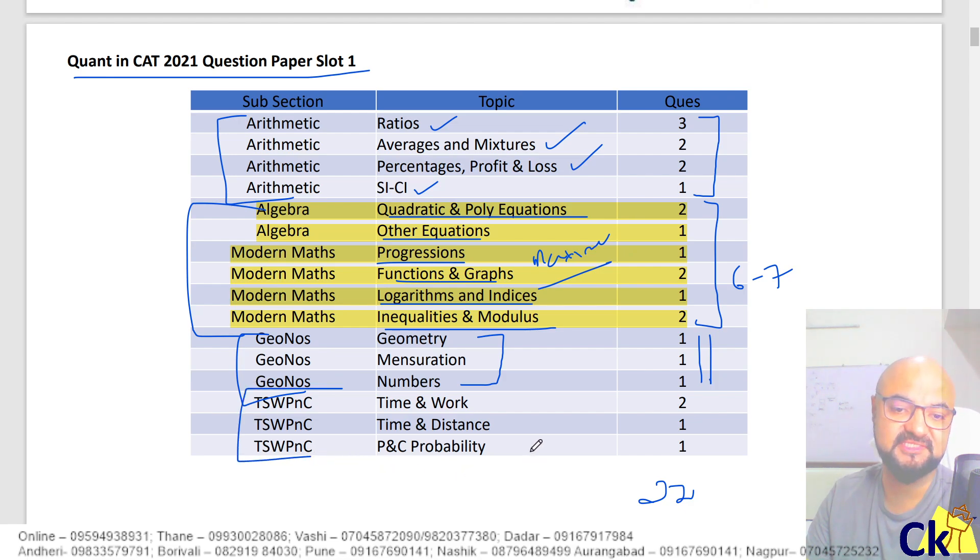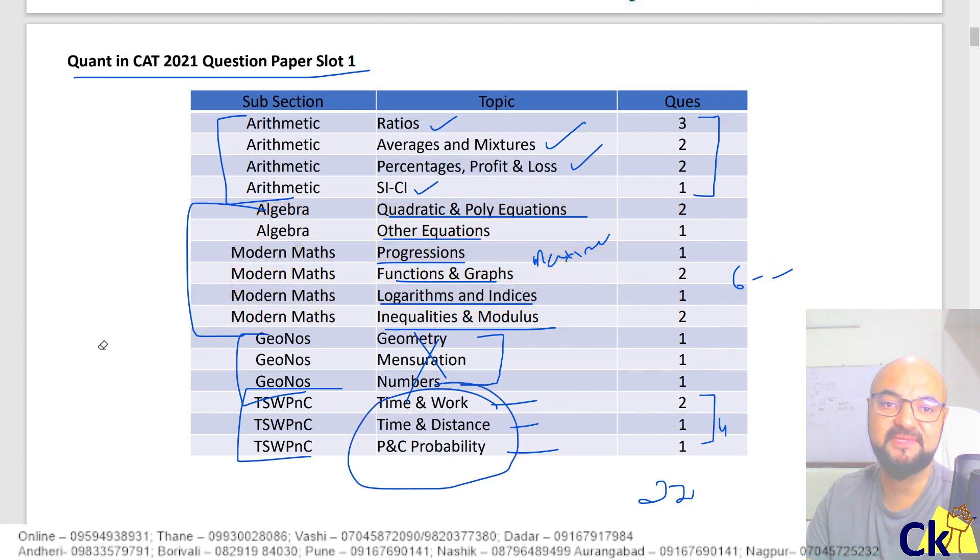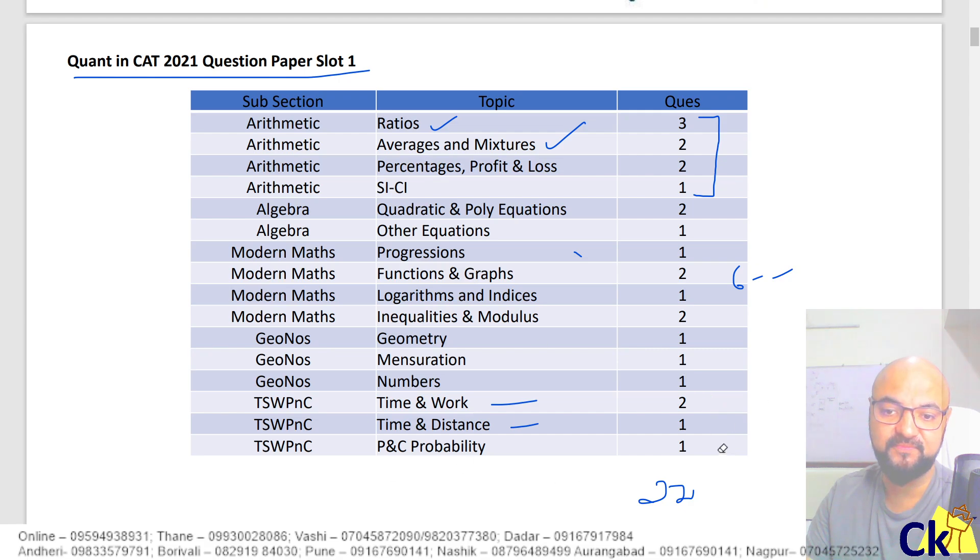And third is times per distance, time and work, P&C probability, time and work, time and distance, probability. This is four questions. Geometry, mensuration. Chhod de number, chhod de bhai chalega. Yeh jyada hi point hai. So this is a complete slabber from the CAT point of view, from the quant point of view.